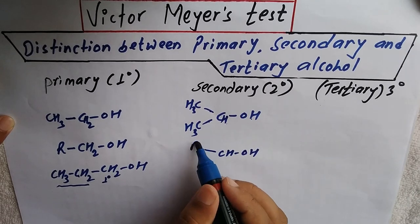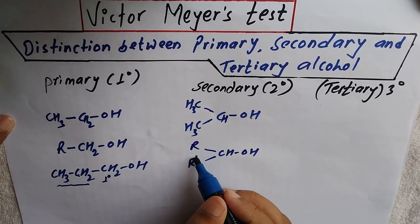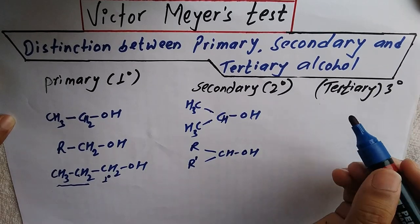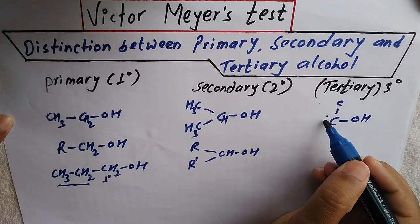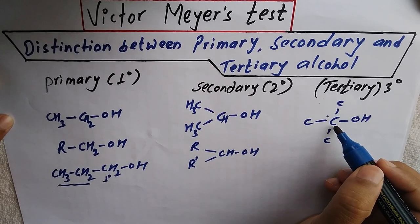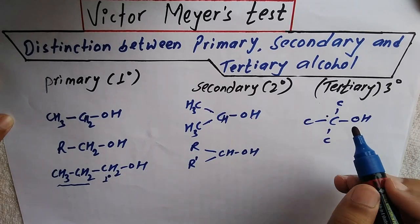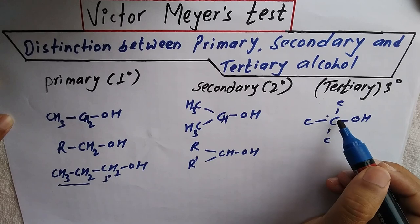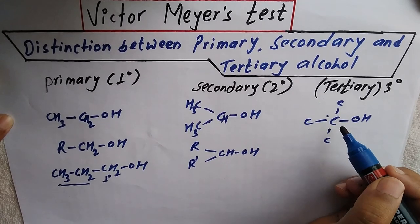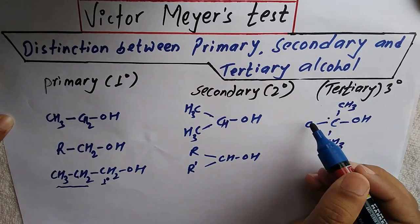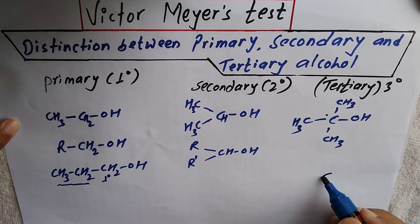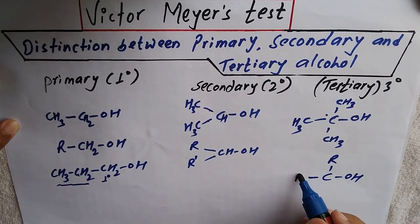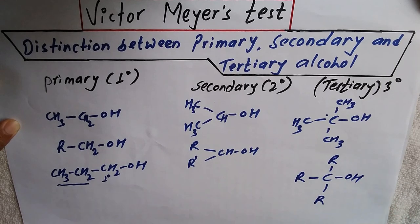The general representation of secondary alcohol is R₂CHOH, where R and R' may be the same or different. For tertiary alcohol, the OH-bonded carbon is bonded with three carbons — one, two, three — making it a three-degree carbon. There is no hydrogen on that carbon. The example is (CH₃)₃COH, and the general representation is R₃COH, where R, R', and R'' may be the same or different.